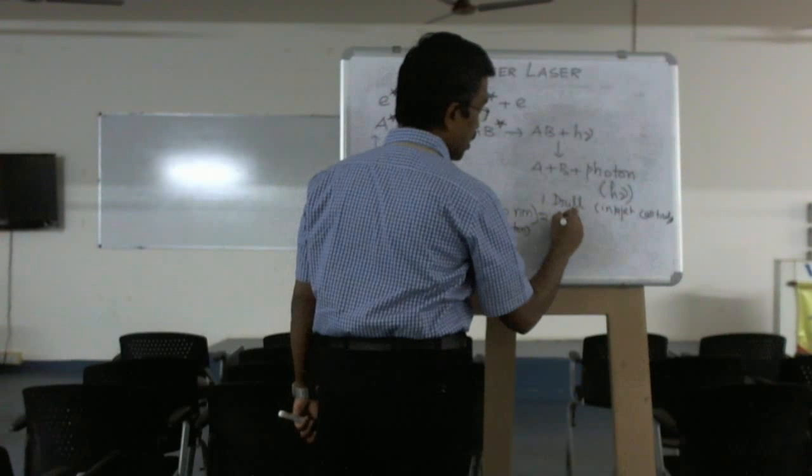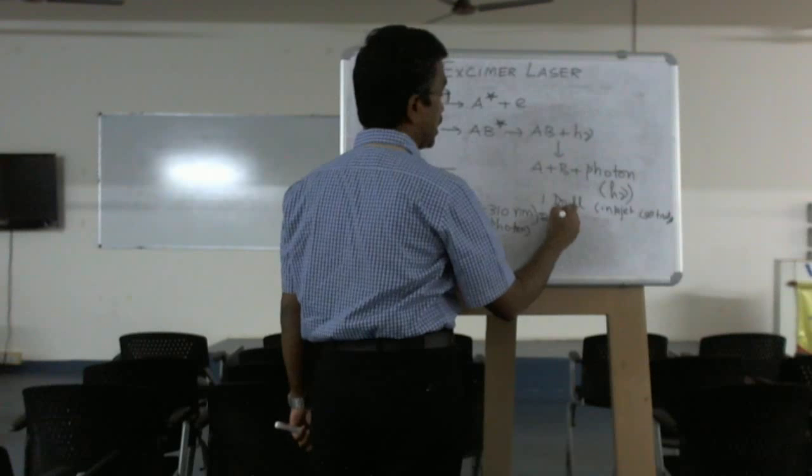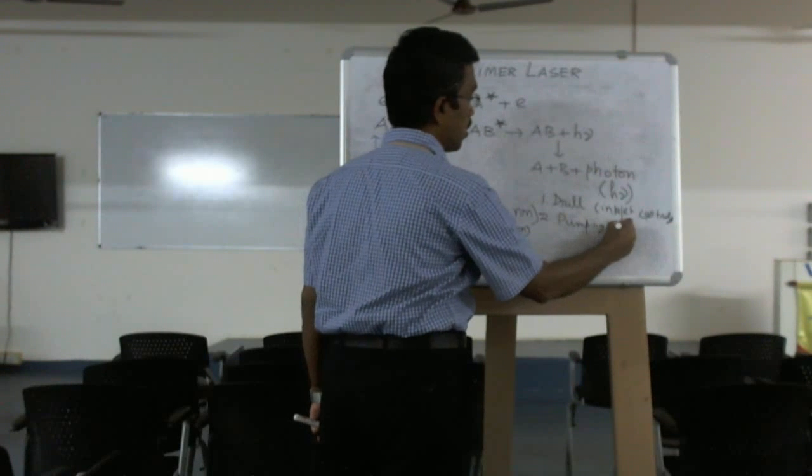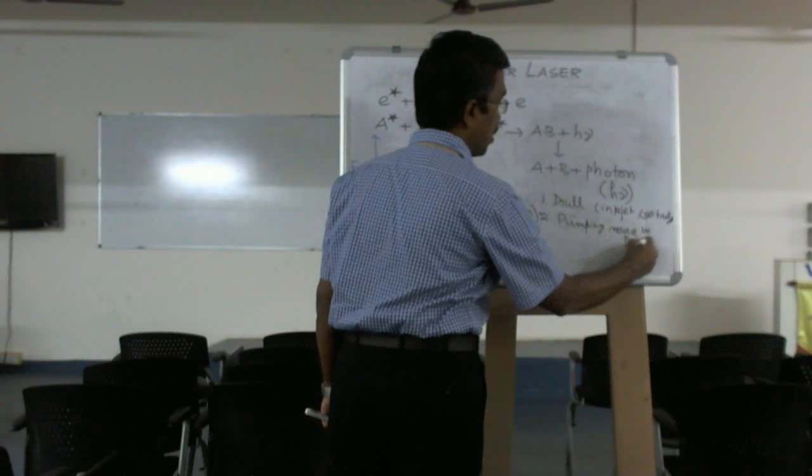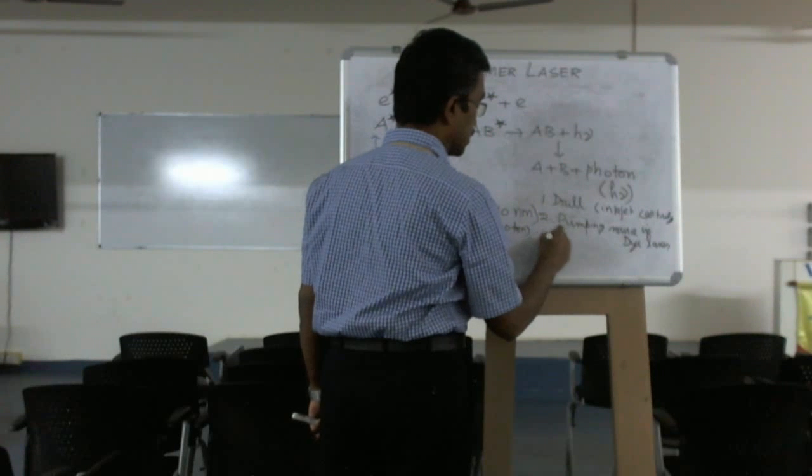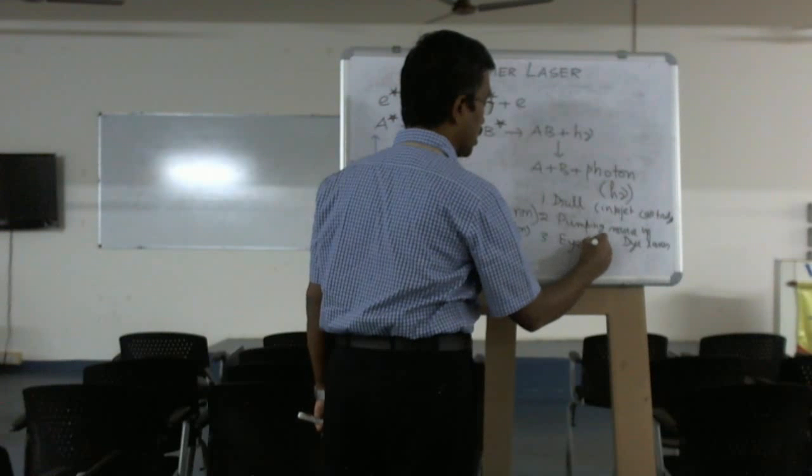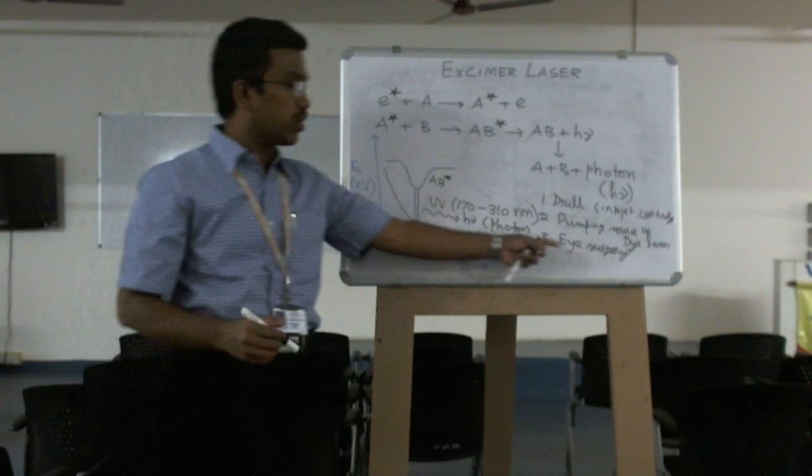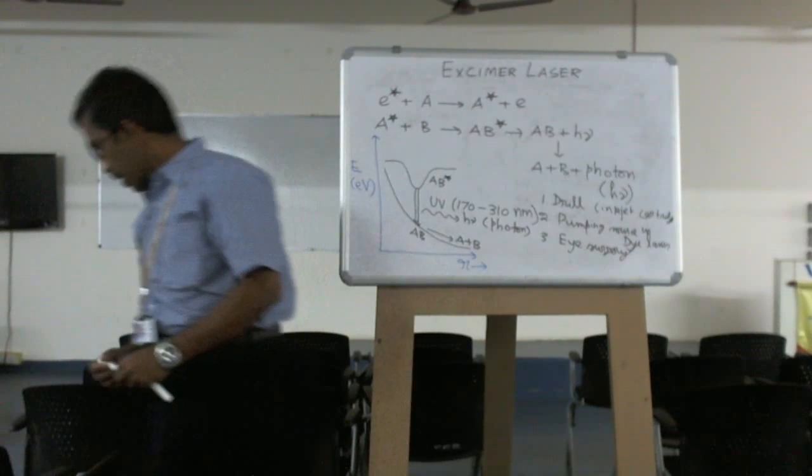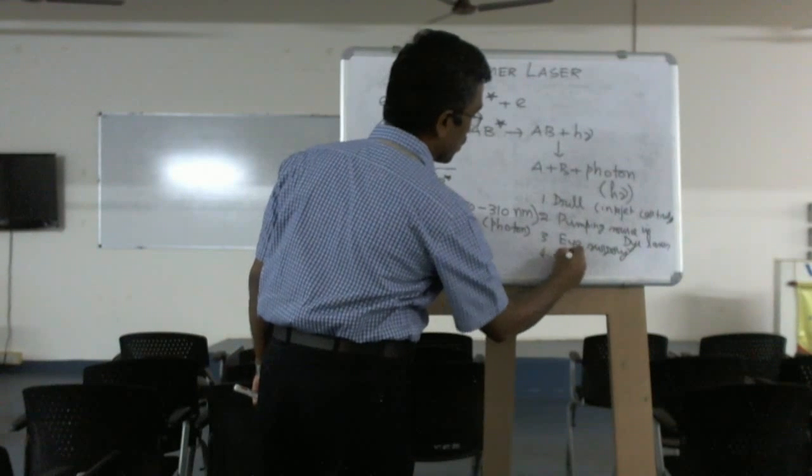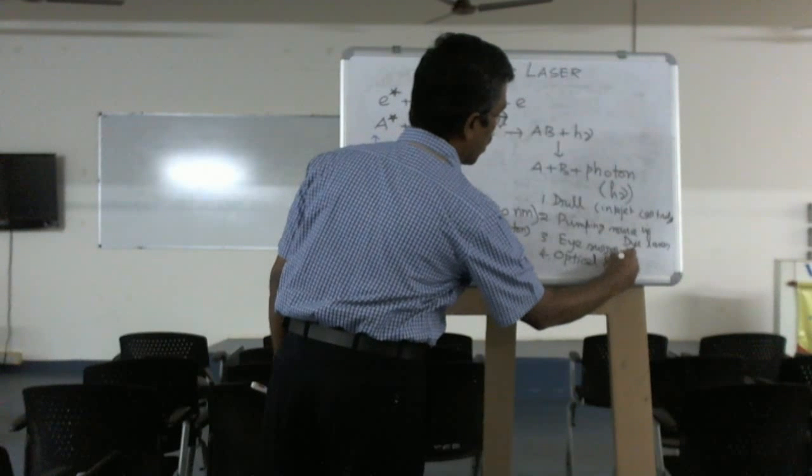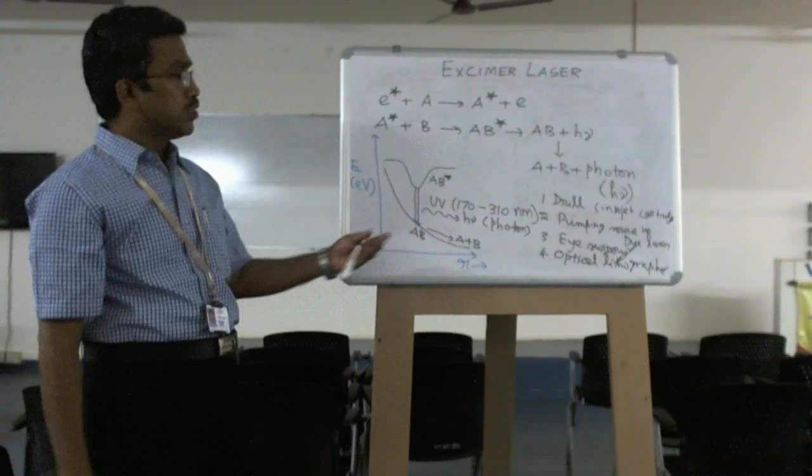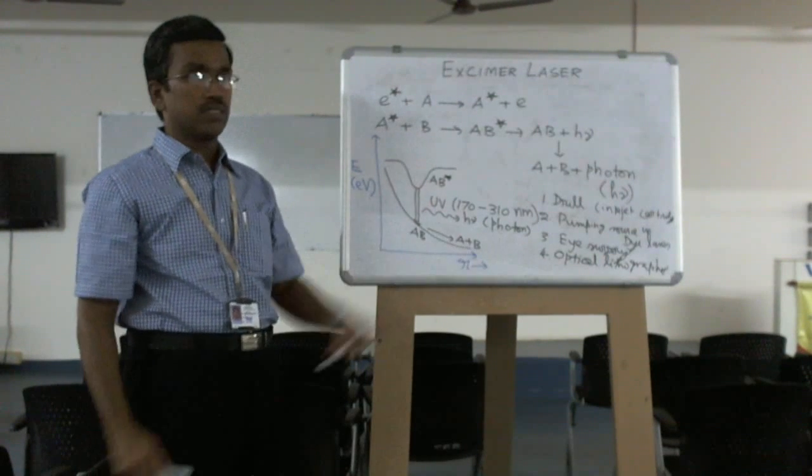The second one is for pumping mechanism in any laser. The excimer laser acts like a pumping source in dye lasers. Third one is for eye surgery. We can use the excimer laser - that is, argon fluoride. This one we can use as eye laser. And the fourth one is optical lithography. This is one kind of nanotechnology for transfer of images.